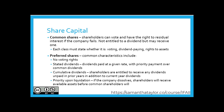Preferred shares have common characteristics, including that they are typically non-voting, although they can be. They typically will state the dividends, and if so, dividends are paid at a given rate with priority payment over common dividends. Those preferred shares may have stated cumulative dividends where shareholders are entitled to receive any dividends unpaid from prior years in addition to current year dividends. Preferred shares do receive priority upon liquidation — if the company dissolves, shareholders will receive available assets to satisfy their shares prior to common shareholders.